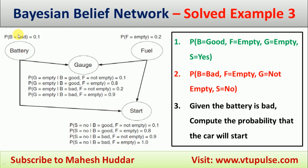We have been given the probabilities: the probability of battery equal to bad is 0.1, so the probability of battery equal to good is 1 minus 0.1, that is 0.9. Similarly, the probability of fuel equal to empty is 0.2, hence the probability of fuel equal to non-empty is 1 minus 0.2, that is 0.8.